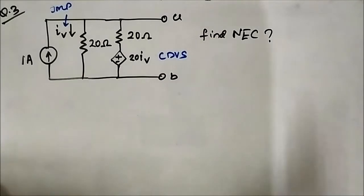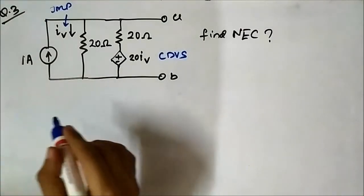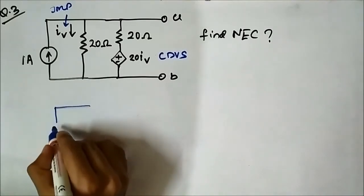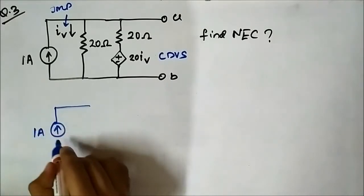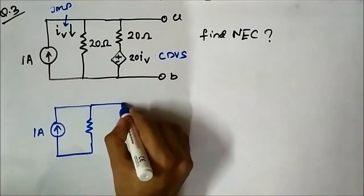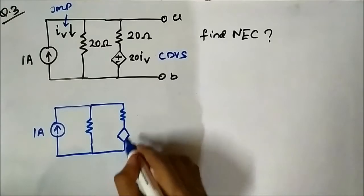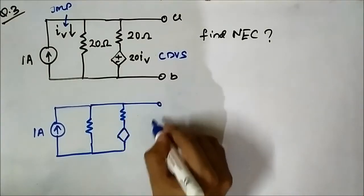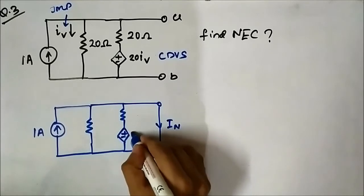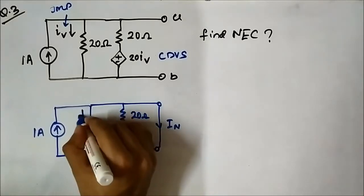Now we have to determine first the Norton current. For that we have to short circuit the terminals A and B and find the current flow through that shorted terminal. So we redraw the circuit: 1 ampere source, 20 ohm, 20 ohm. This is the shorted path. We have 20IV, 20 ohm, 20 ohm, and IV.